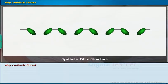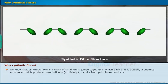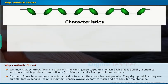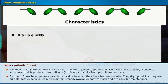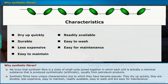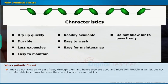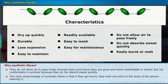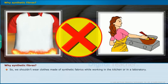Why Synthetic Fibers? Synthetic fibers are a chain of small units joined together, where each unit is a chemical substance produced synthetically, usually from petroleum products. They are durable, less expensive, easy to maintain, readily available, and easy to wash. They do not allow air to pass freely through them, hence they are more comfortable in winter but not comfortable in summer because they do not absorb sweat quickly. The main disadvantage of synthetic fibers is that if they get burnt, they melt and stick to the body. So we should not wear synthetic fiber clothes while working in the kitchen or in a laboratory.